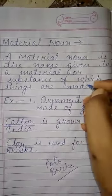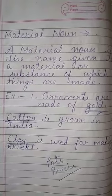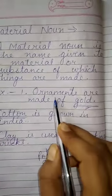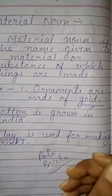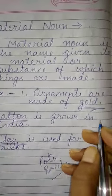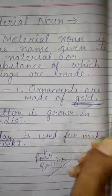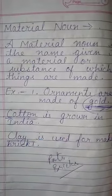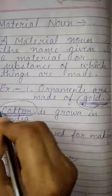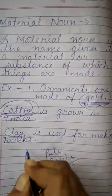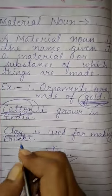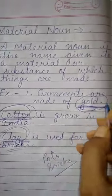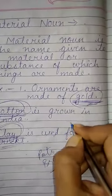Examples: 'Ornaments are made of gold.' Jewelry jo hum pehnte hain — ornaments — woh gold se bane hain. 'Cotton is grown in India.' 'Clay is used for making bricks.' So gold, cotton, clay — in sab se hum kaafi cheezein bana sakti hain. Gold se hum jewelry bana saktay hain.